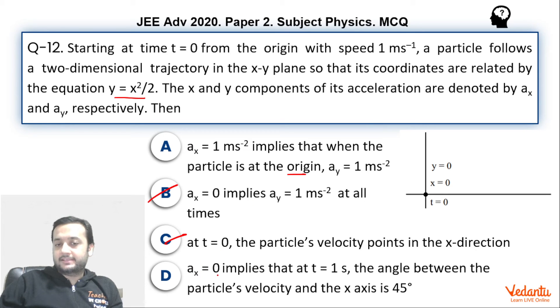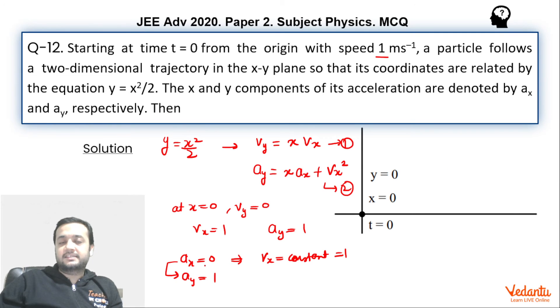Option D, ax equals to 0 implies that at t equals to 1, the angle between the particle's velocity and the x axis is 45 degrees. Again, this is a fairly simple option.